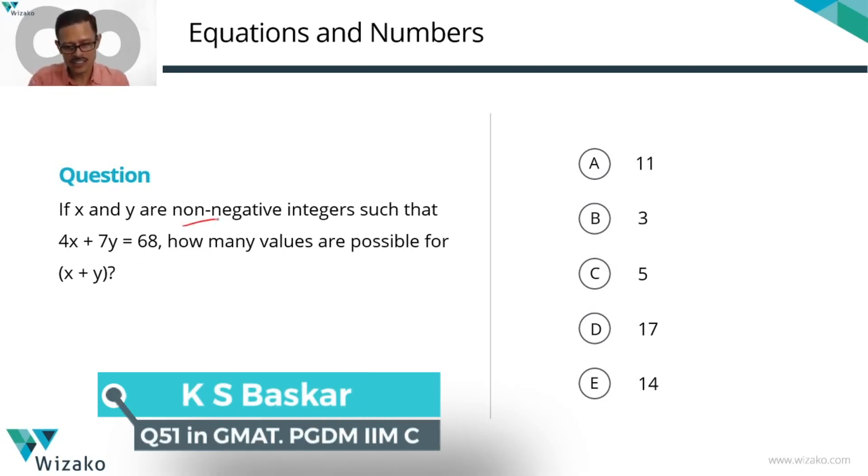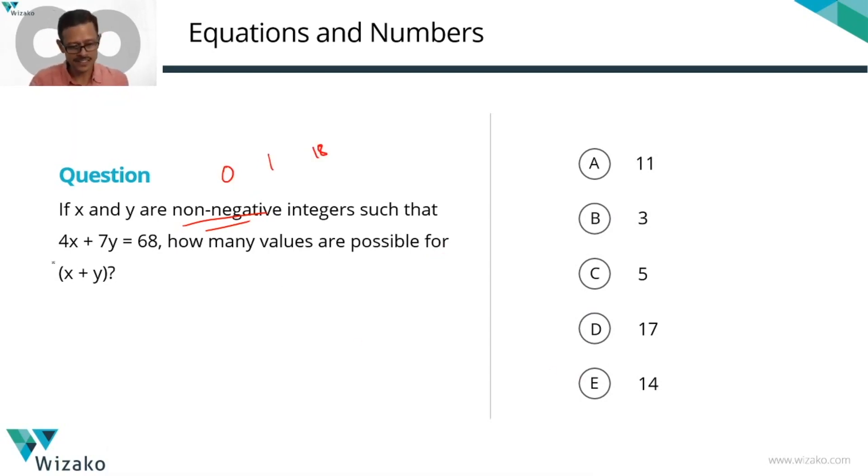If x and y are non-negative integers - so can it be 0? It can very well be 0. It can be 0, 1, 18, any integer other than numbers which are negative such that it satisfies this condition: 4x plus 7y equals 68. How many possible values are there for x plus y?